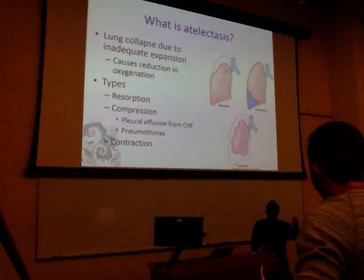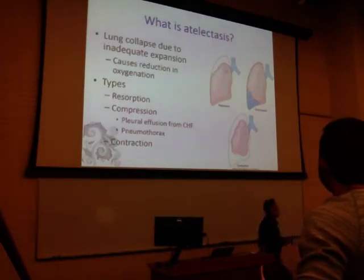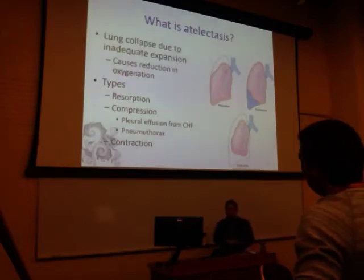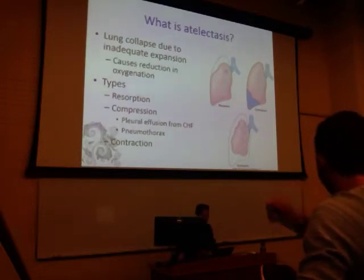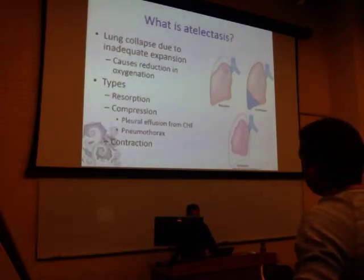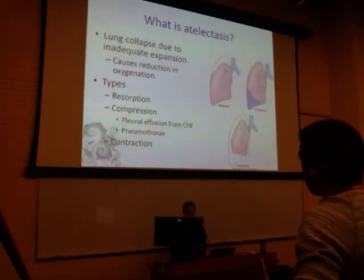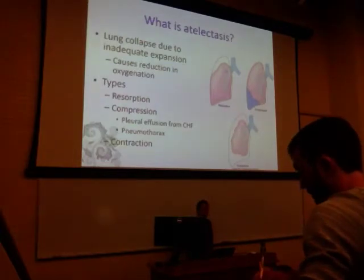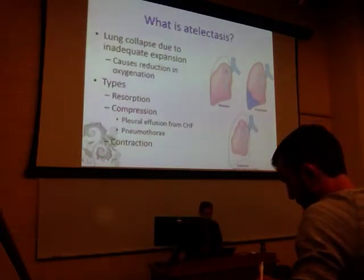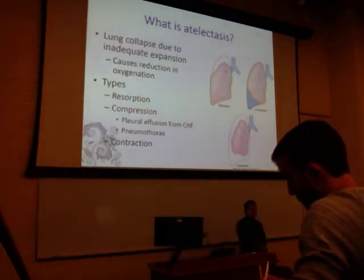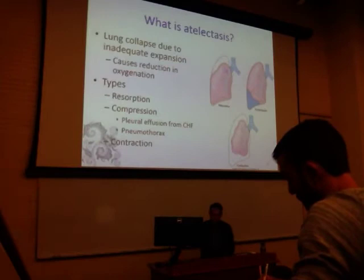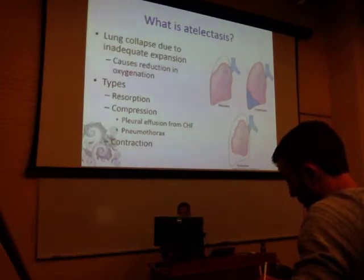Blood in the pleural cavity usually means the patient is very close to death or already deceased. The third type, contraction, shown in the lower figure, is where fibrotic changes take place. The fibrosis prevents the lungs from expanding and hampers the elastic recoil. So atelectasis is lung collapse.